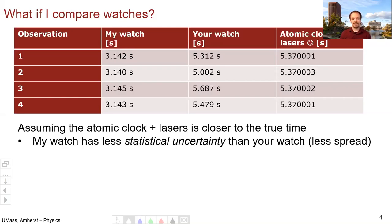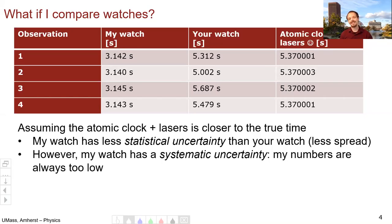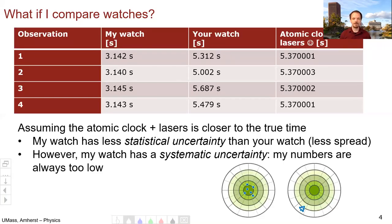My watch has less statistical uncertainty than your watch does. The variation between the numbers is smaller. You can see they're pretty tightly clumped. However, my watch has a systematic uncertainty. My numbers are always too high. My watch runs slow. This is a systematic effect.